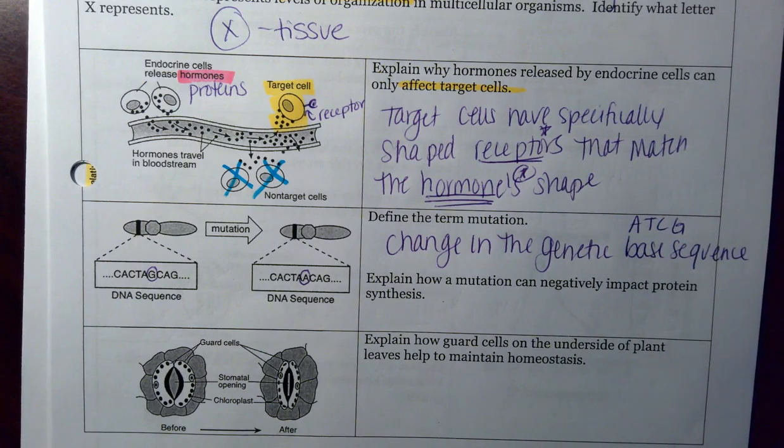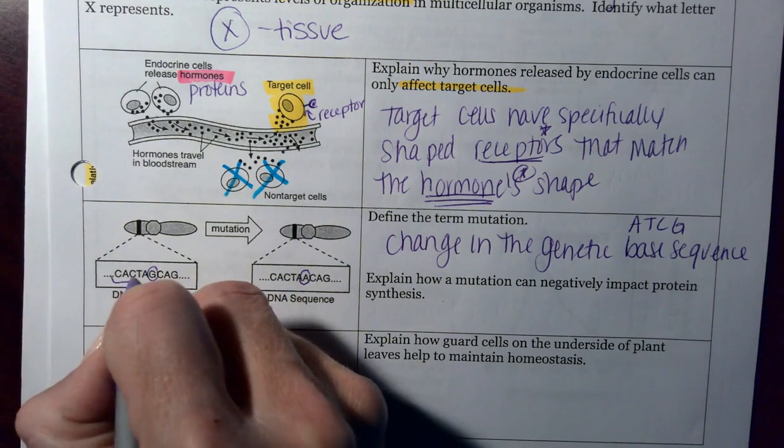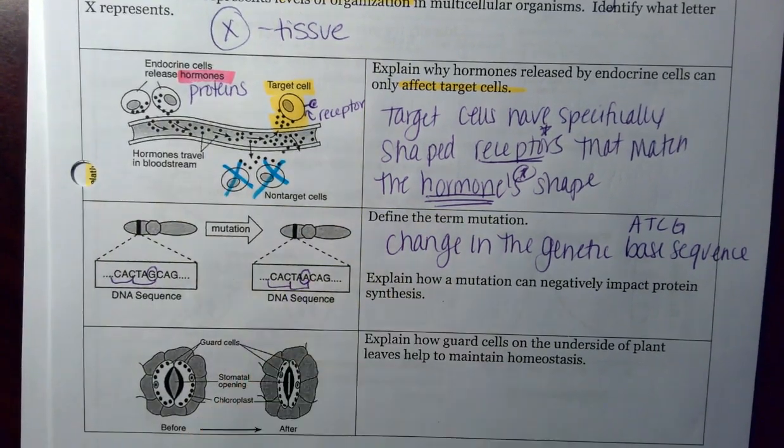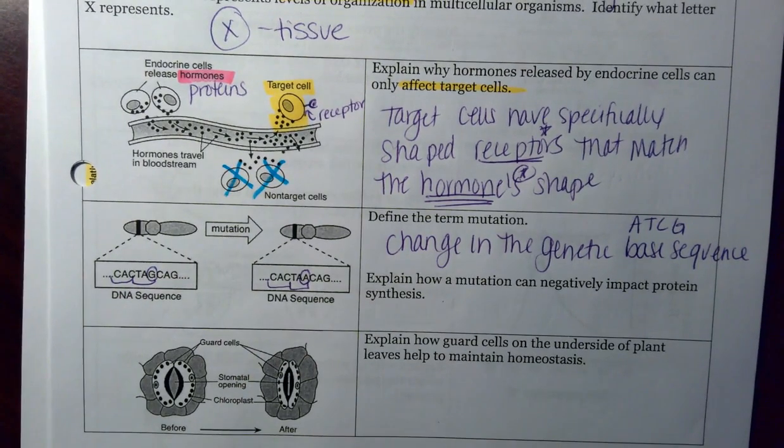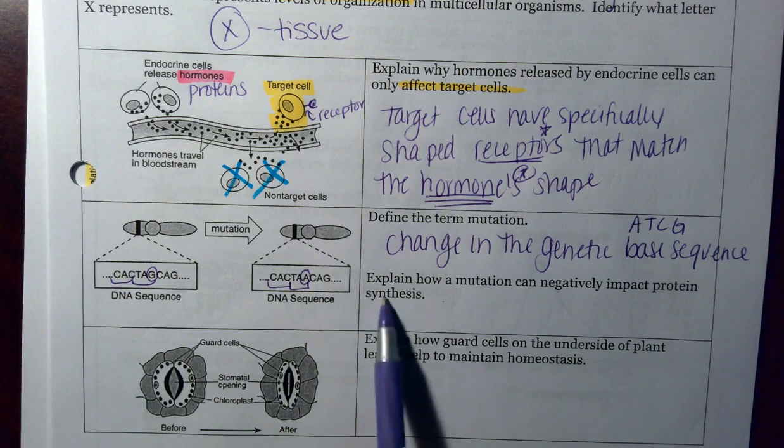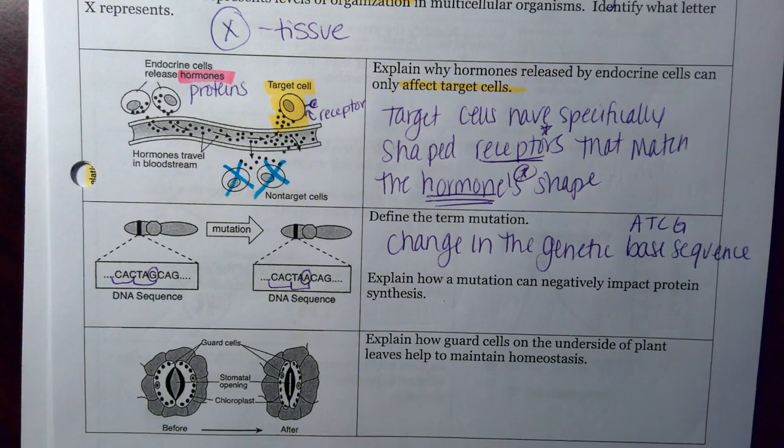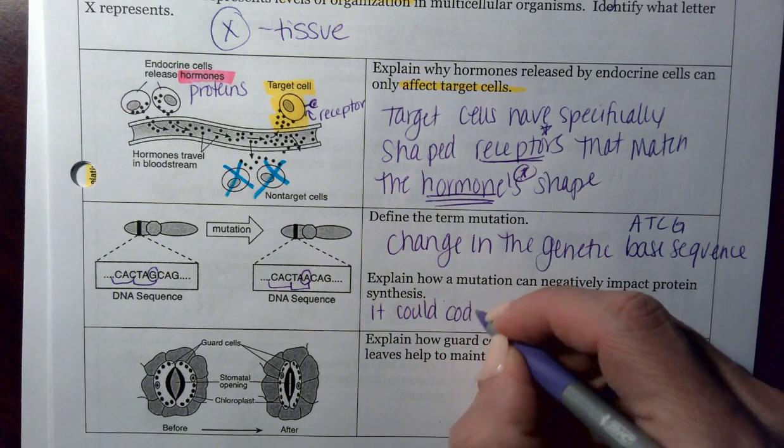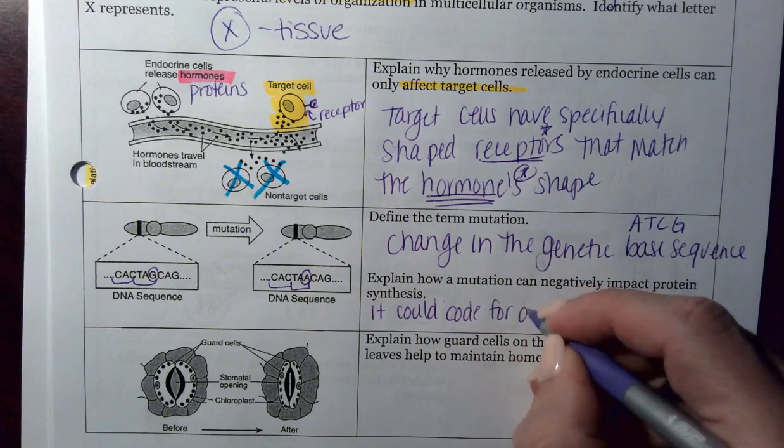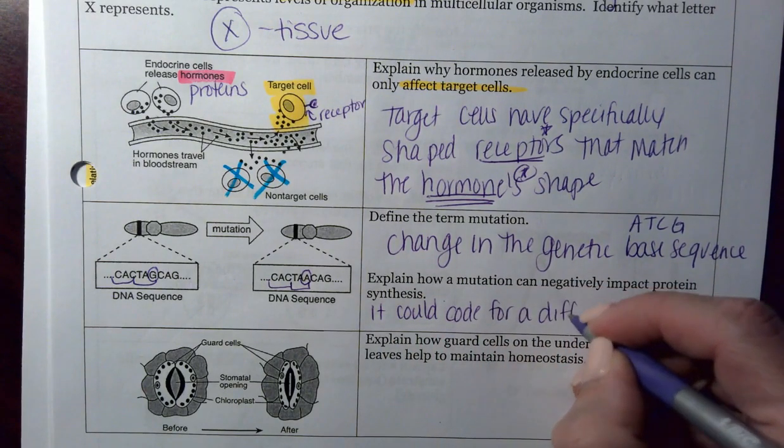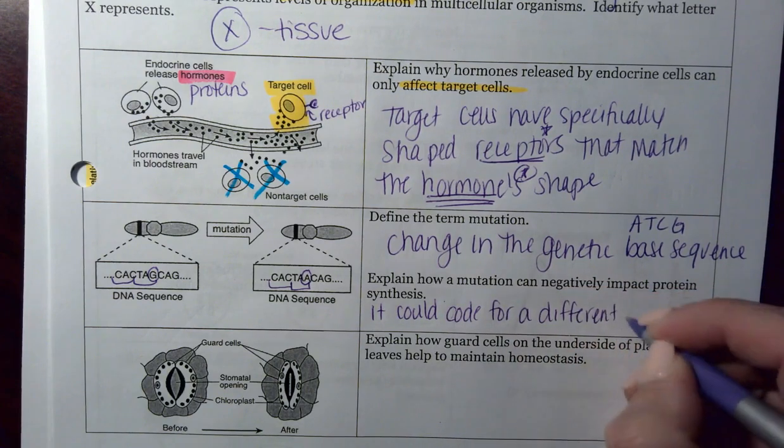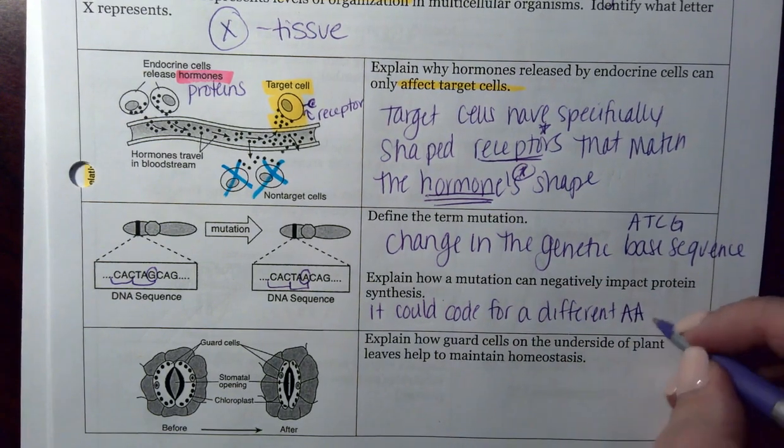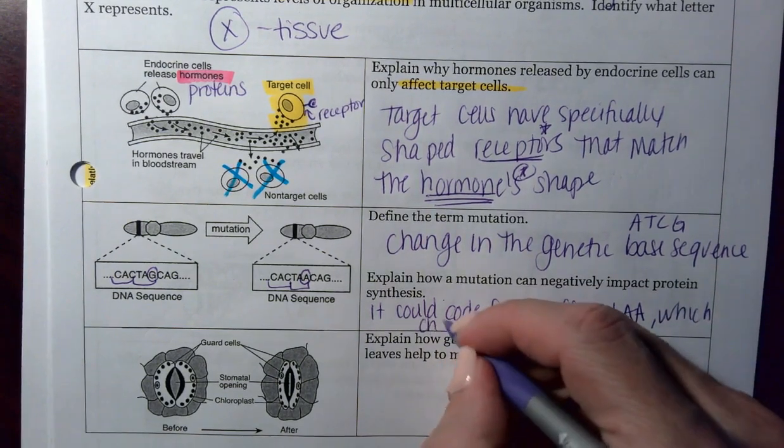Sometimes when you change it, it's going to just be a silent mutation, which doesn't change the amino acid, because we group them in threes. But every so often, you wind up getting a new amino acid. And if you get a new amino acid, that protein is going to twist into a different shape. So it says, explain how a mutation can negatively impact protein synthesis. It could code for a different amino acid. Think back to that codon chart. I'm going to abbreviate amino acid AA, which changes the protein shape.